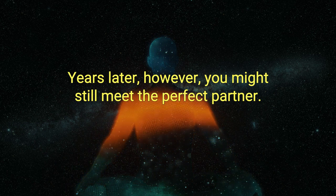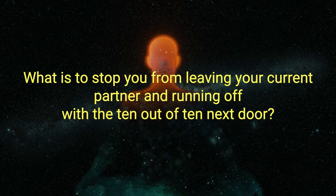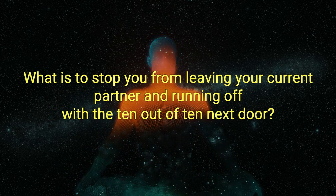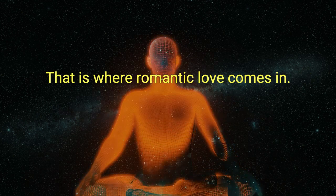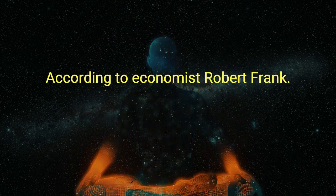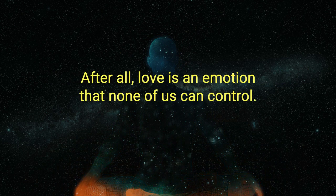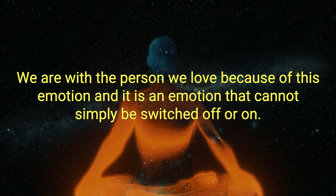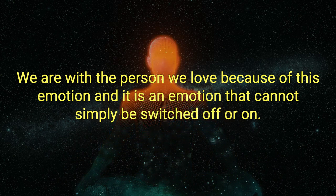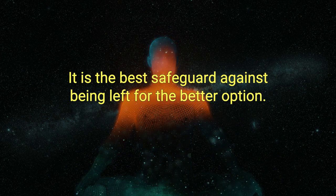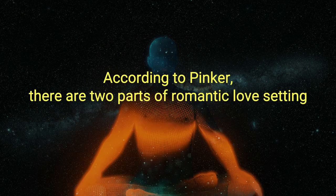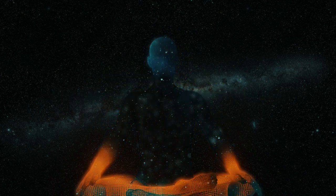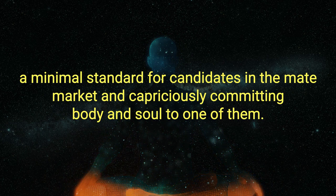Years later, however, you might still meet the perfect partner. What is to stop you from leaving your current partner and running off with the 10 out of 10 next door? That is where romantic love comes in, according to economist Robert Frank. After all, love is an emotion that none of us can control. We are with the person we love because of this emotion. And it is an emotion that cannot simply be switched off or on. It is the best safeguard against being left for the better option. According to Pinker, there are two parts of romantic love, setting a minimal standard for candidates in the mate market, and capriciously committing body and soul to one of them.